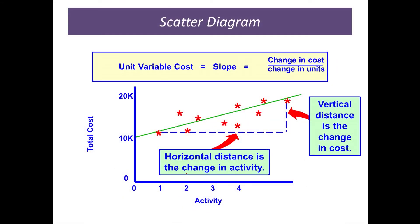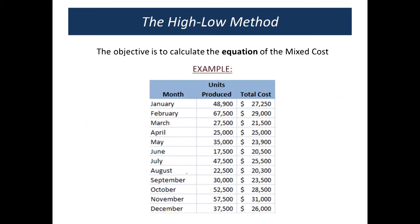Once we determine that there is a relationship between two variables, we still want to come up with the equation of that line — the y equals a plus b times x. One way that we can do that, kind of a quick and dirty little way, is what is known as the high-low method.